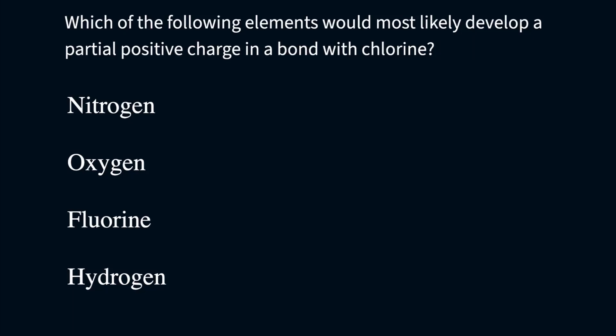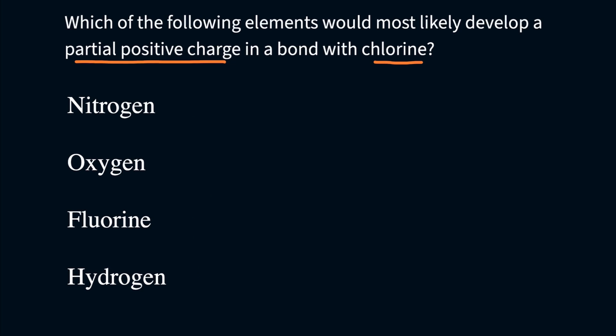Which of the following elements would most likely develop a partial positive charge in a bond with chlorine? Would it be nitrogen, oxygen, fluorine, or hydrogen?